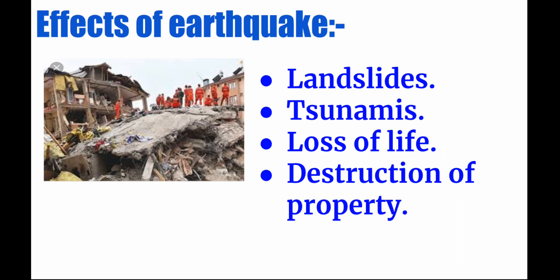Second, if an earthquake occurs in the sea, it can cause big strong waves called tsunamis. Third, there is a lot of loss of life — many people get trapped under buildings or in houses; some die and some become completely disabled. Last is destruction of property — as seen in the picture where a building is completely collapsed — and people have to recover and rebuild after this.